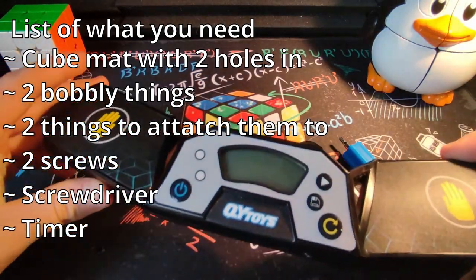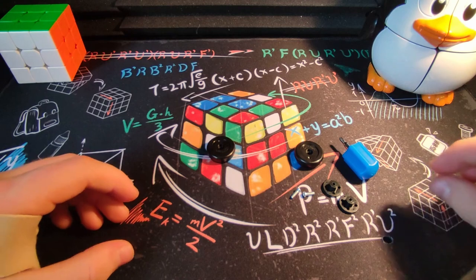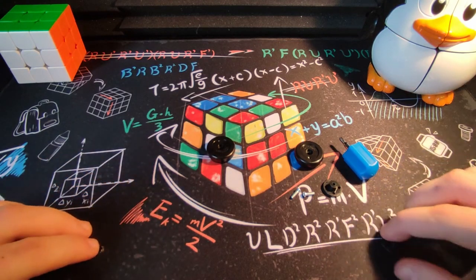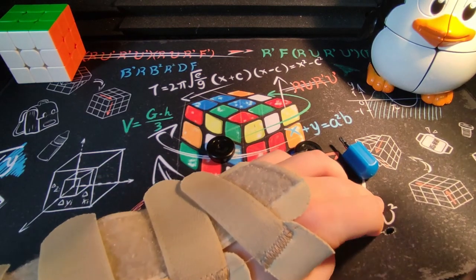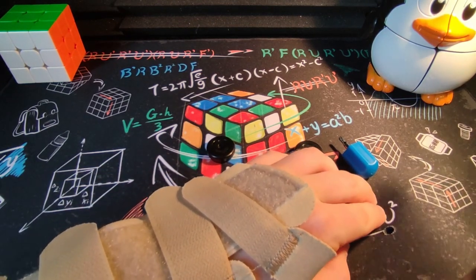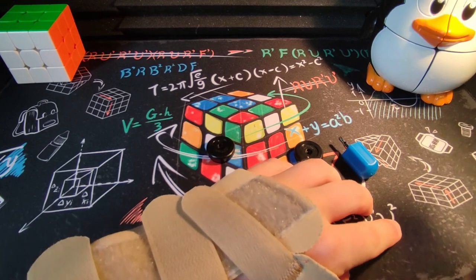You're just going to want to set your timer aside for the time being and get your two little connector thingies. The first one is just going to go under this side and you should see it pop up through this hole any second.